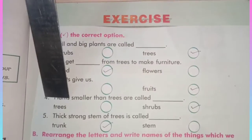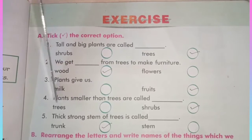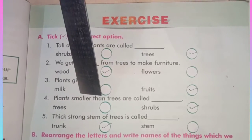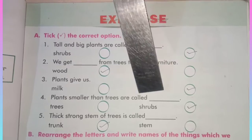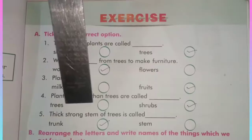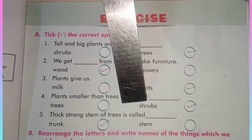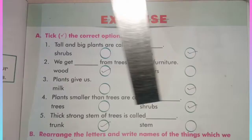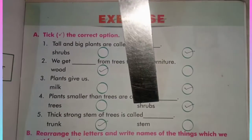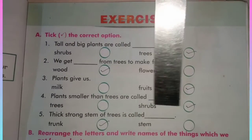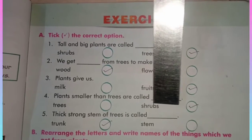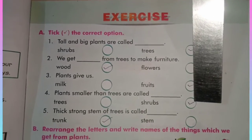Our next question is question number 4: Plants smaller than trees are called? Here there are two options. Which is the correct option students? Trees or shrub? Yes, shrub is the correct option. So we will tick on shrubs.